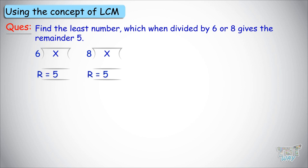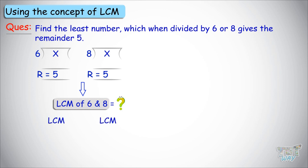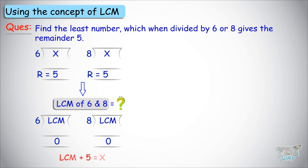We need to find the least common multiple of 6 and 8 first — that is, the least number which is divisible by both 6 and 8. Then we will find the number which gives a remainder of 5 upon division by adding 5 to the LCM. So, let's find the LCM.